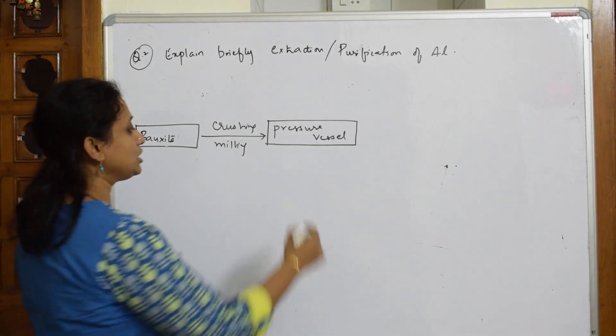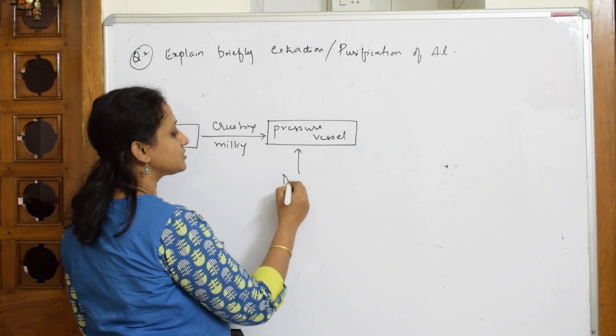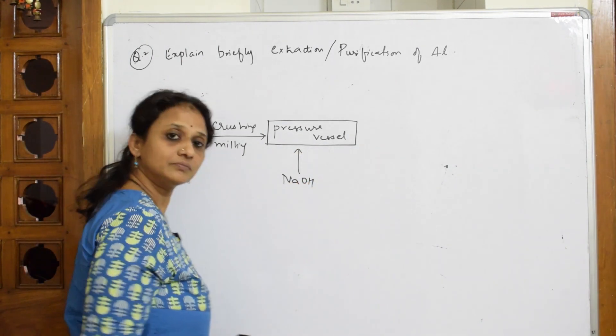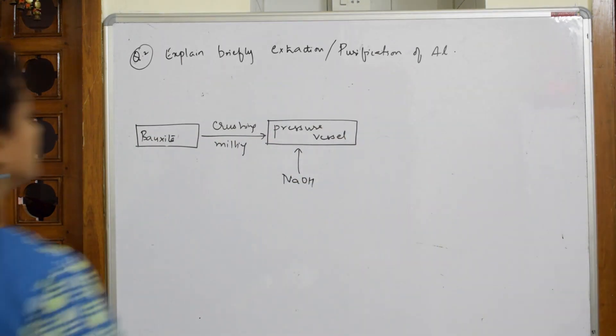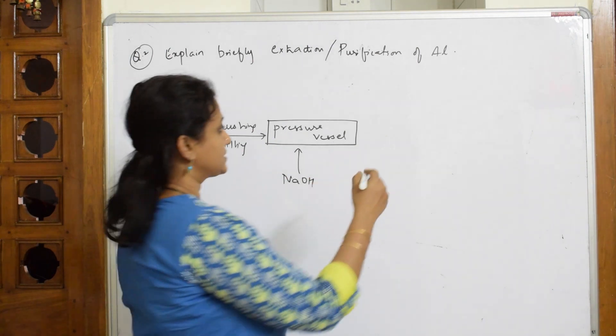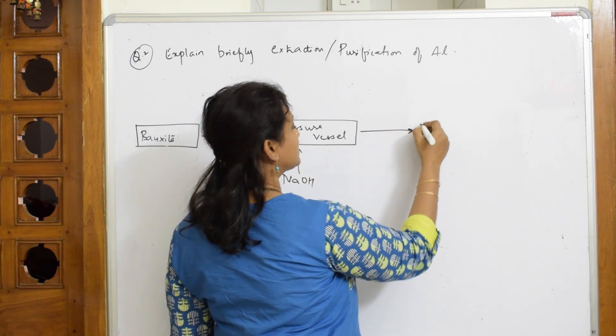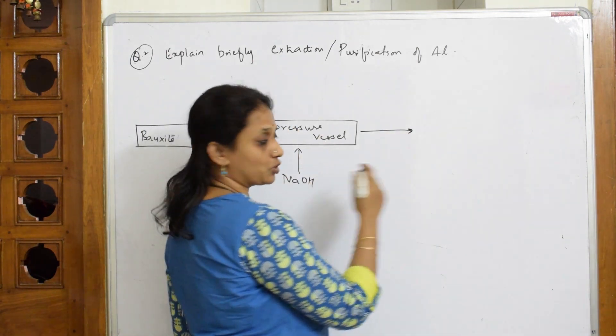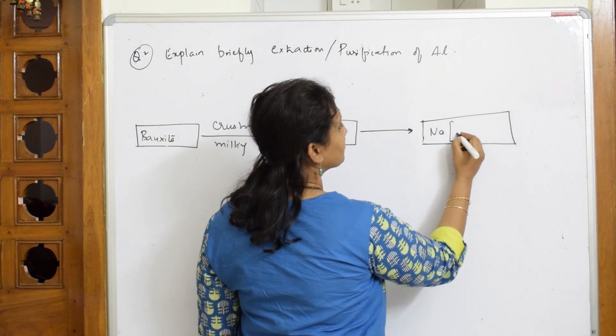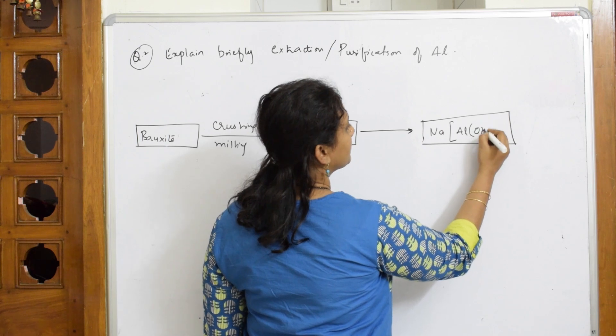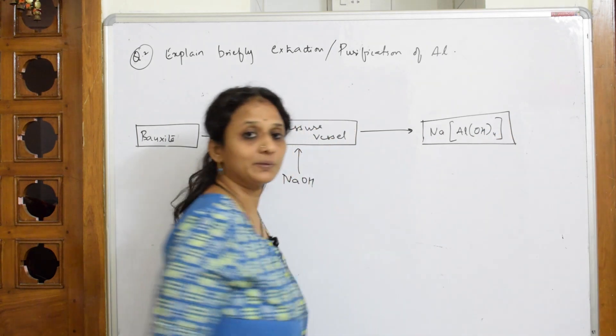Now to this pressure vessel, you are going to induce or fuse it with sodium hydroxide. Now when this is fused together with bauxite, you get a complex. What is the complex? Sodium aluminium hydroxide. This is your complex.